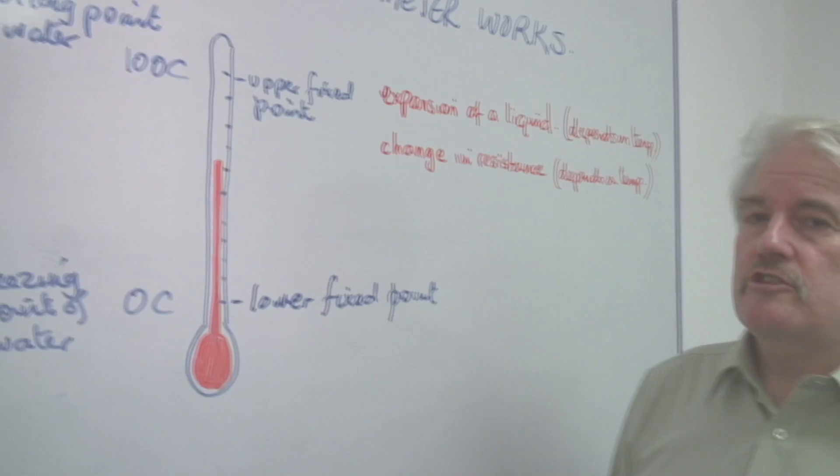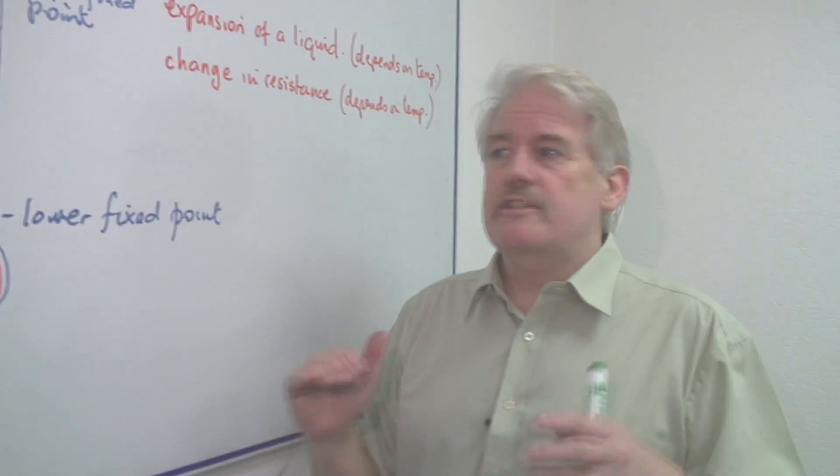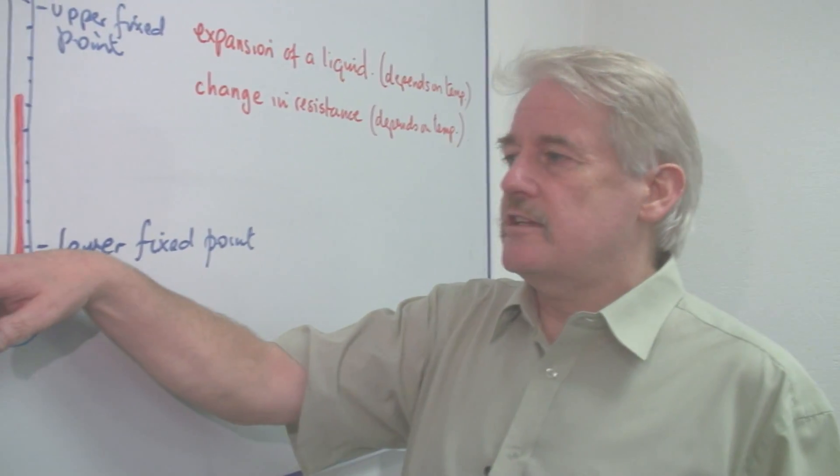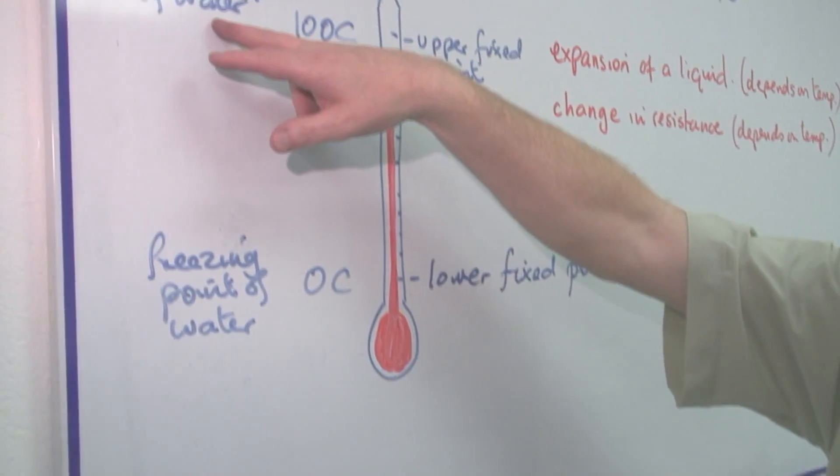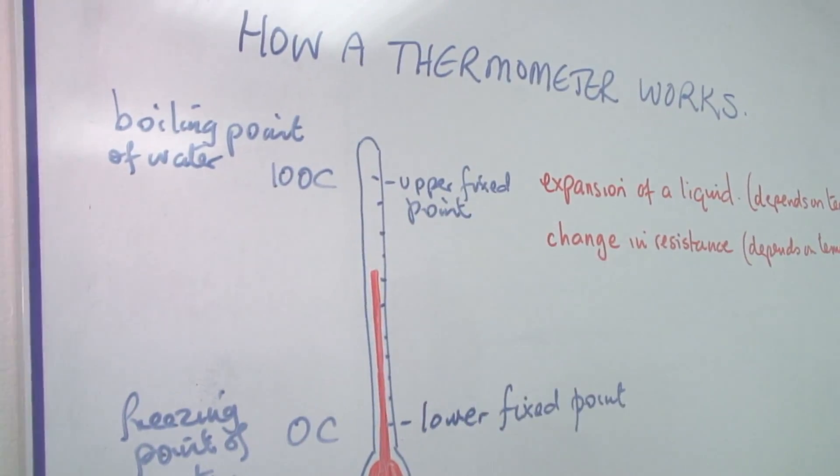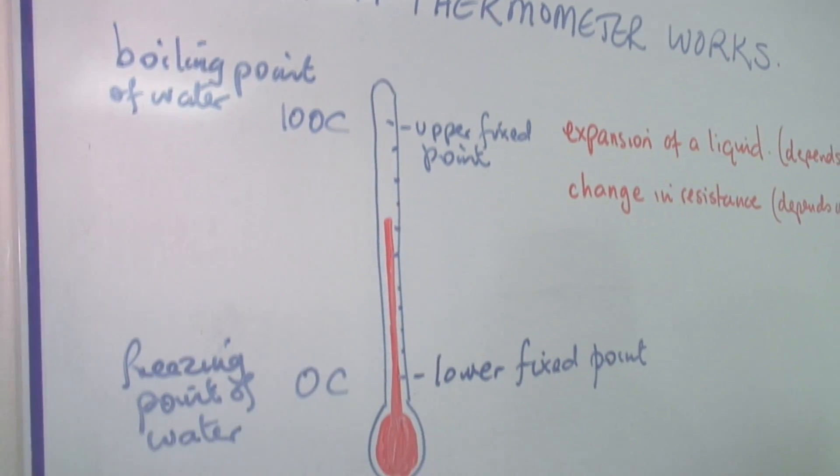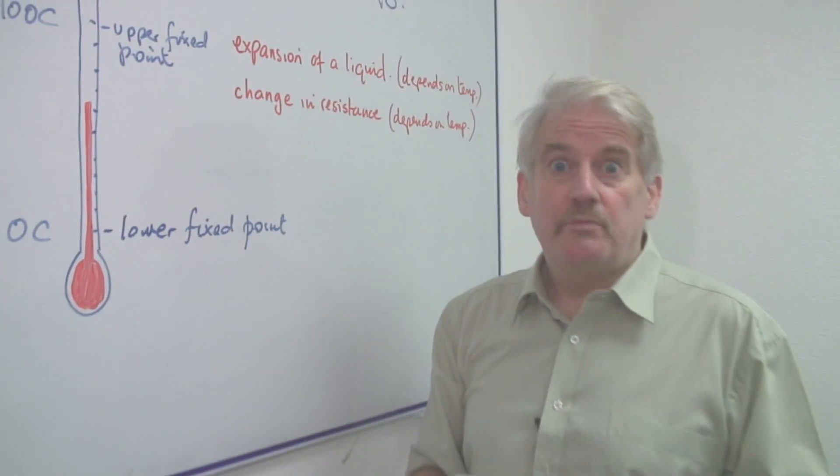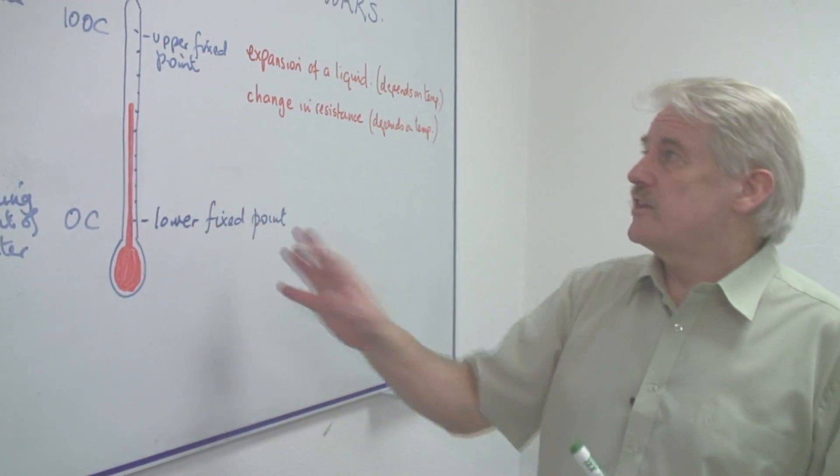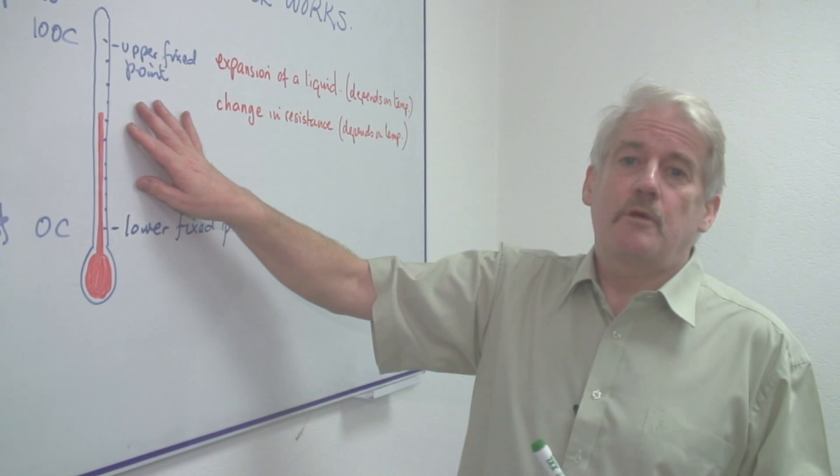Then what you need to do is you need some standard temperatures, and we have a standard temperature at 0 Celsius, which is the freezing point of water, and 100 Celsius, the boiling point of water. So you can easily create a thermometer in this way because this expansion should be uniform. So this is how a liquid-in-glass thermometer works.